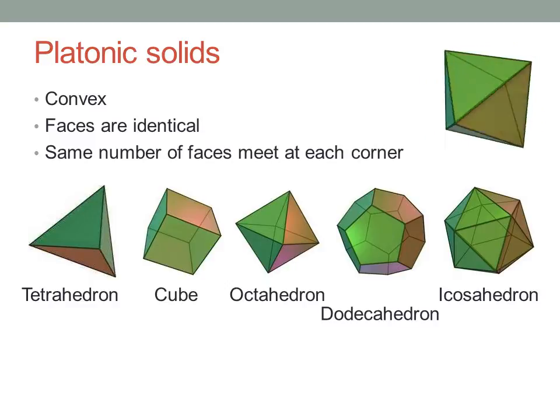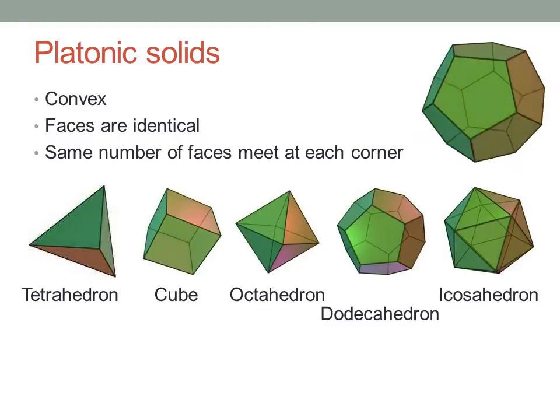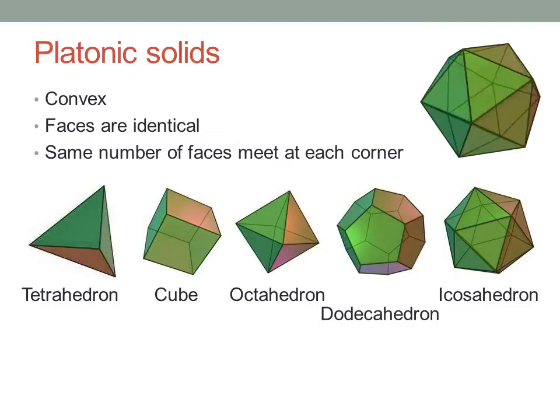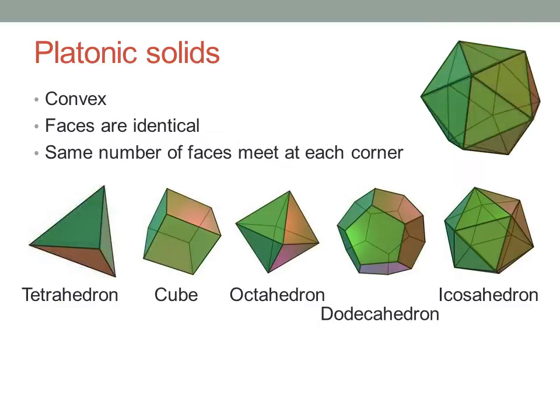The octahedron has eight triangular faces. It, and the rest of the platonic solids, are neither prisms nor pyramids. The dodecahedron has twelve pentagonal faces – dodeca means two and ten – and the icosahedron has triangular faces, twenty of them.